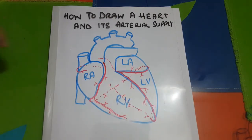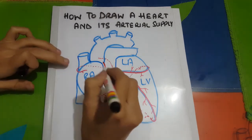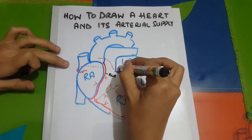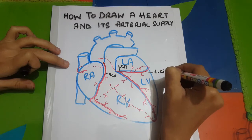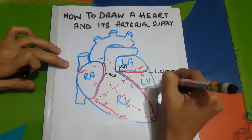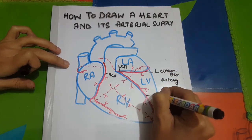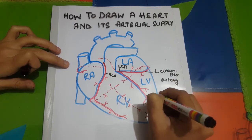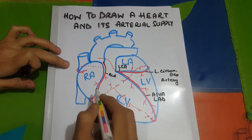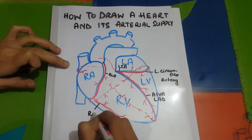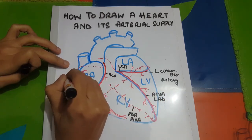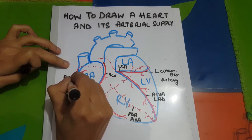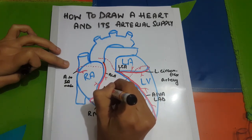Now let's label the arteries. This is the right coronary artery, this is the left circumflex artery, this is the left anterior descending artery or left anterior interventricular artery, this is the right marginal artery, this is the posterior descending artery or posterior interventricular artery, this is the artery to the SA node, and this is the artery to the AV node.